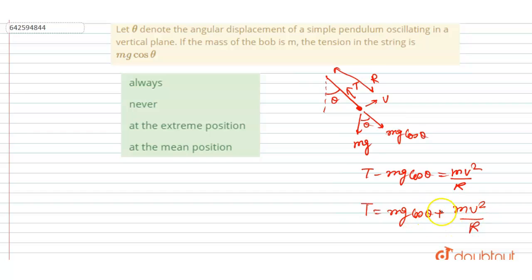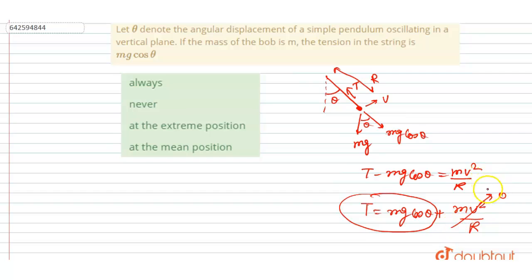Now, if we want T to be equal to mg cos theta, then the term mv squared by r must vanish, which means v should be equal to zero. And v equals zero at the extreme position of the pendulum.